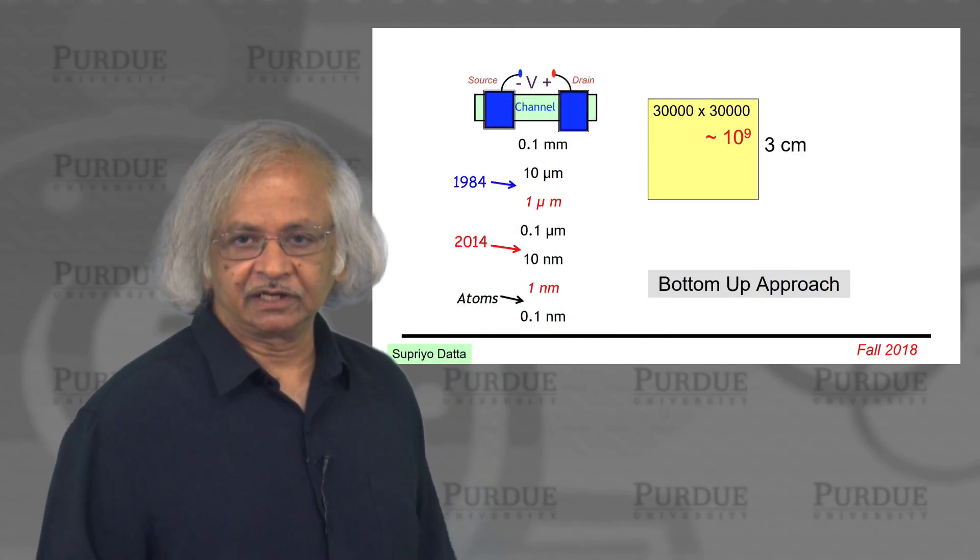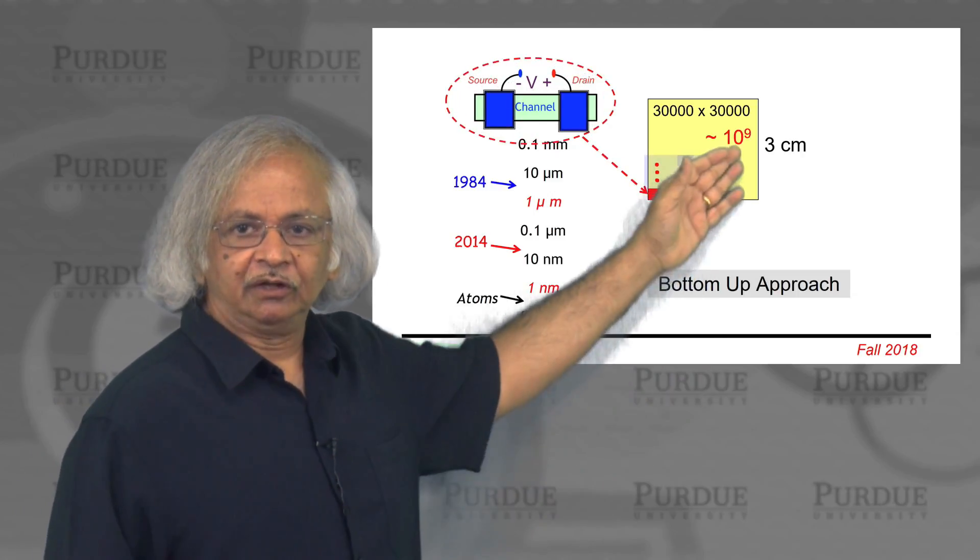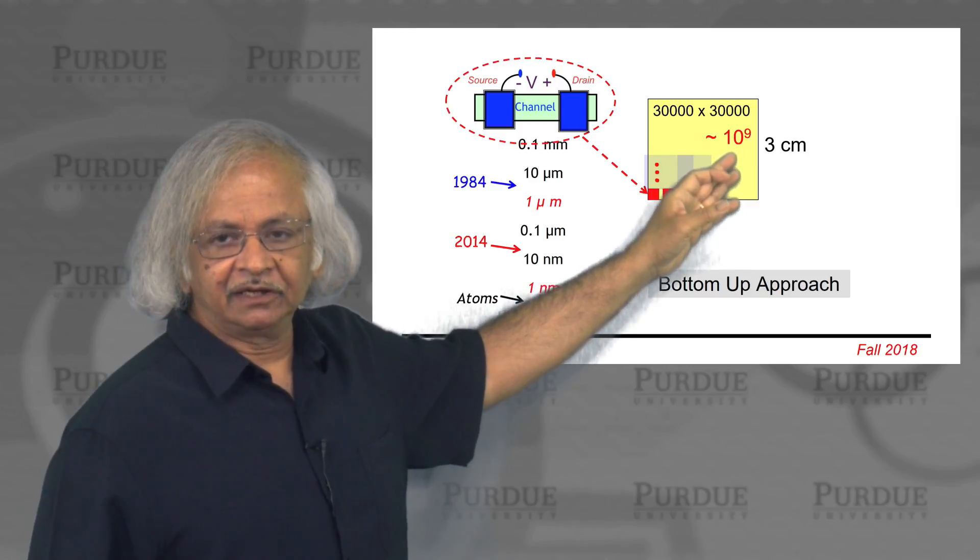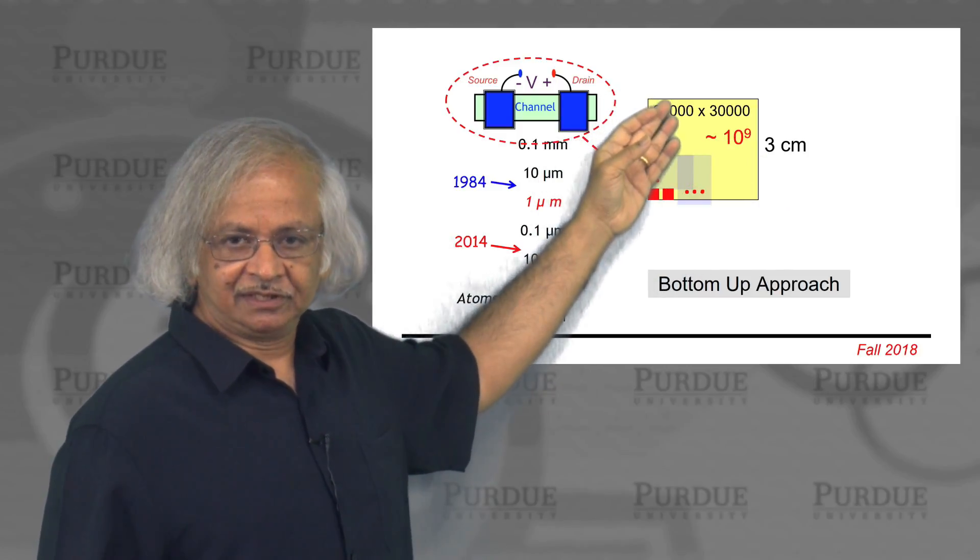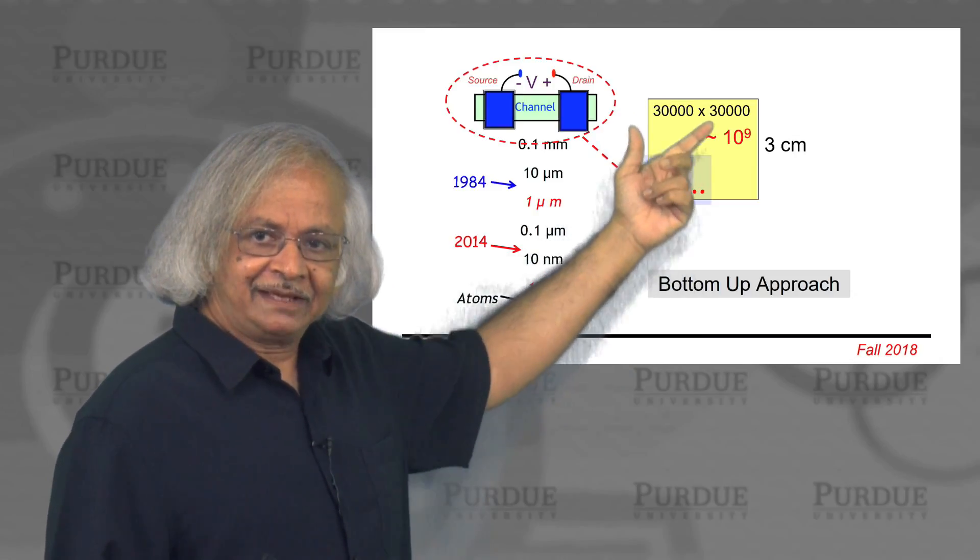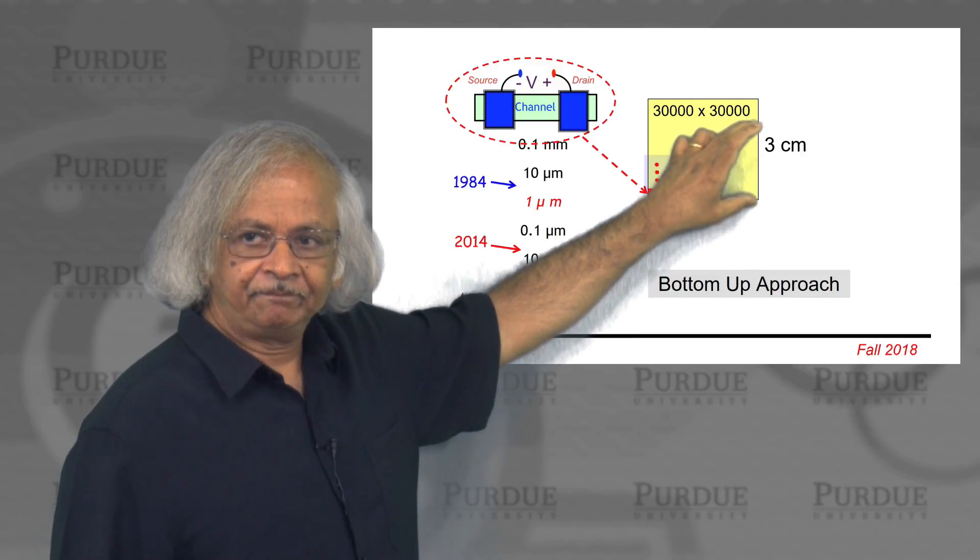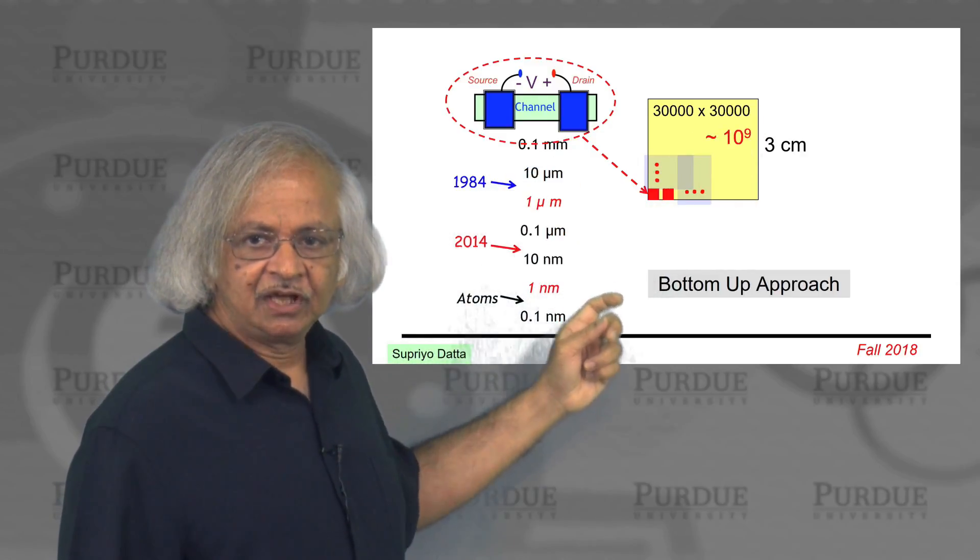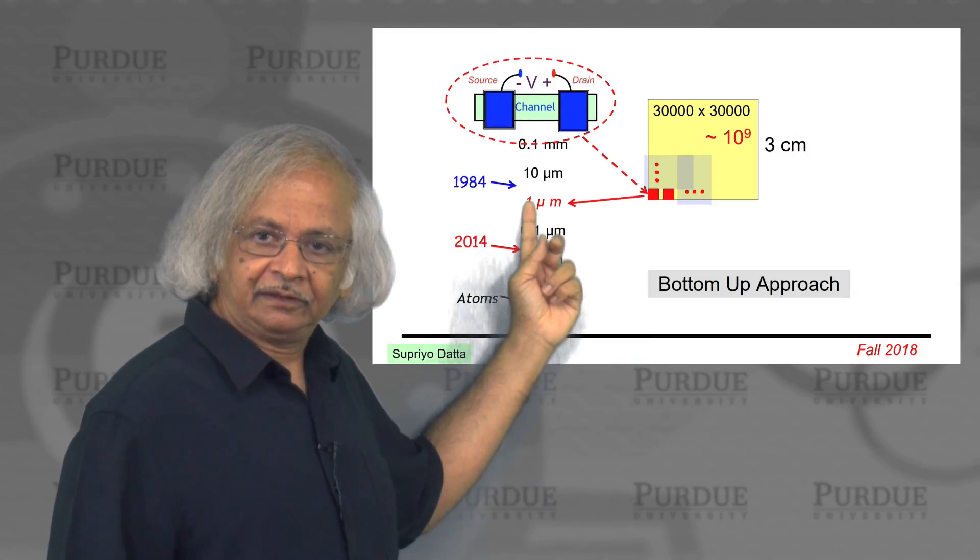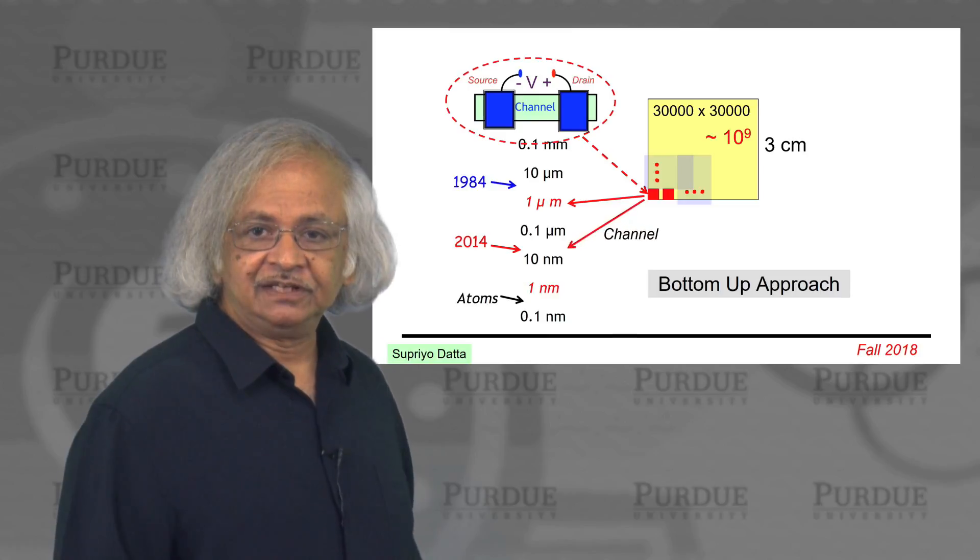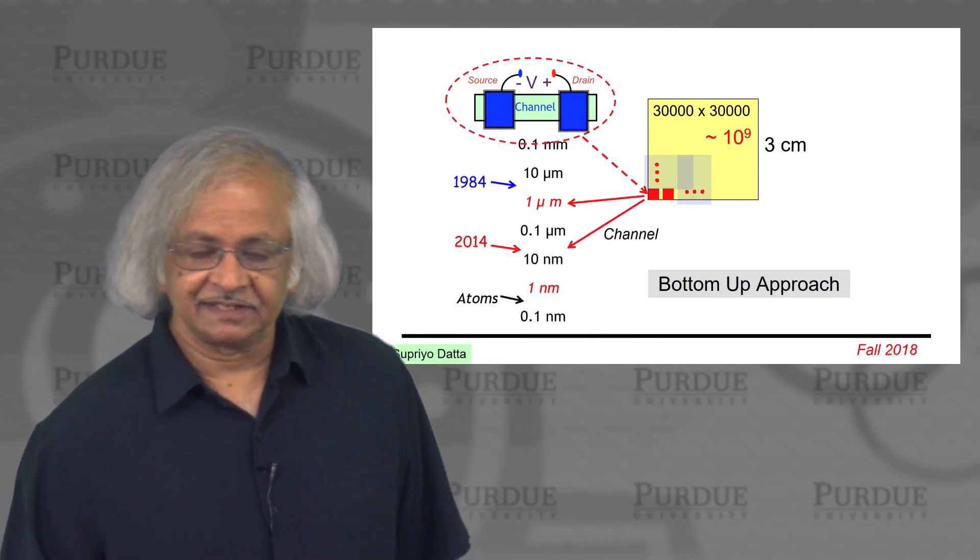So if you have a billion of them that you want to fit into three centimeters by three centimeters, you can do the math. You'd have to make like 30,000 fit this way and 30,000 fit that way, which means each of these transistors would have to fit in like a micron by one micron. And of course, the active region itself is even smaller. That's where commercial devices are today.